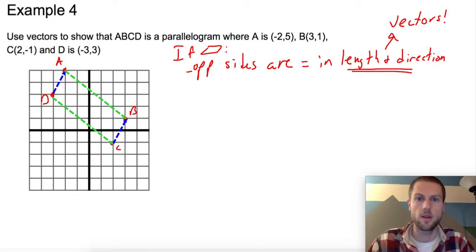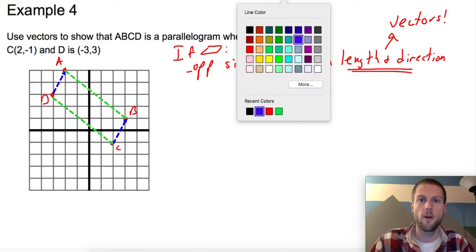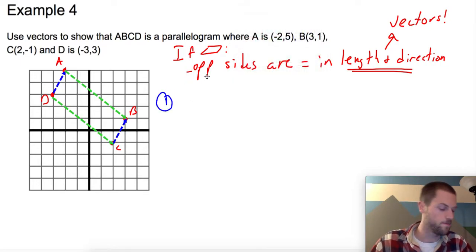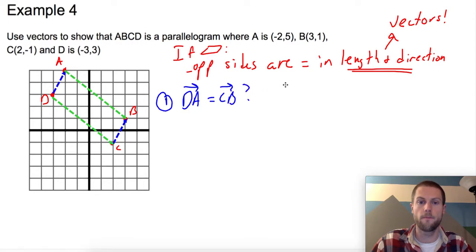So my first pair is, let's go with the blue pair. We want to know, for the first pair, is vector DA equal to vector CB? How do we show that? Well, let's just find the components of both of these.